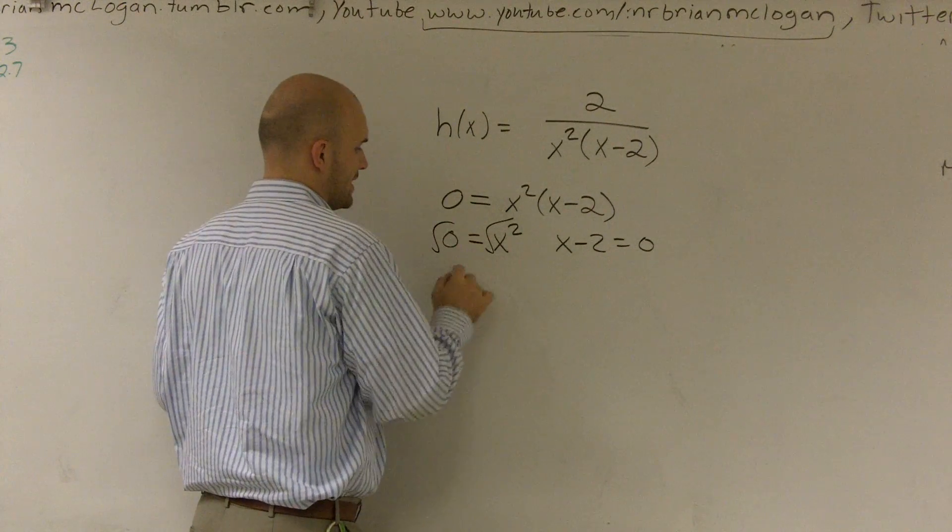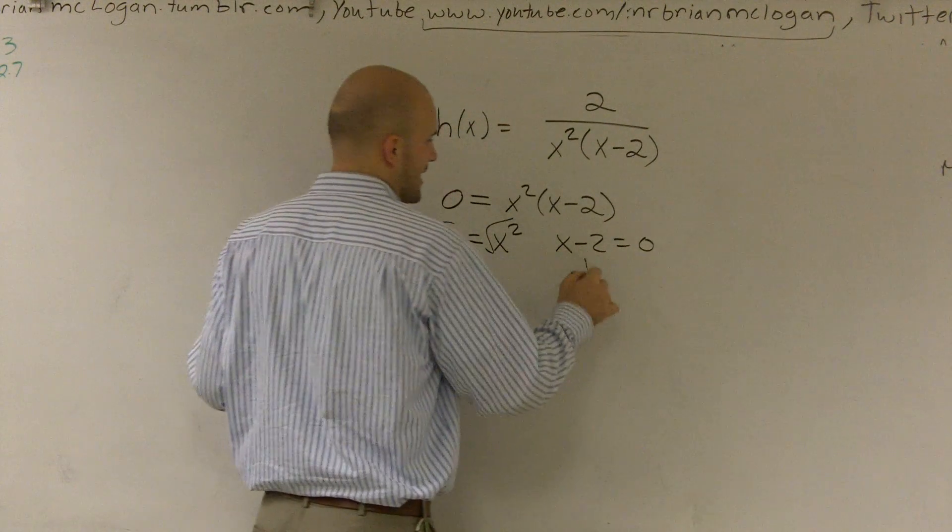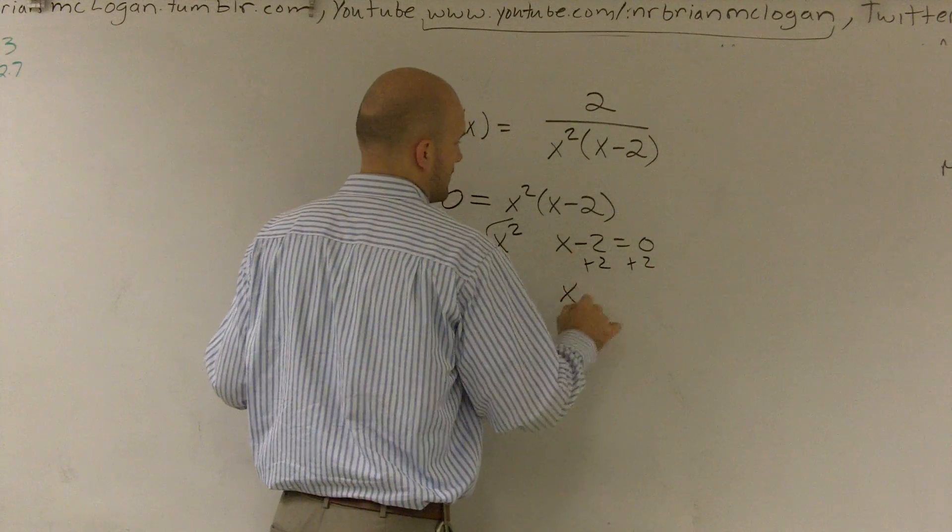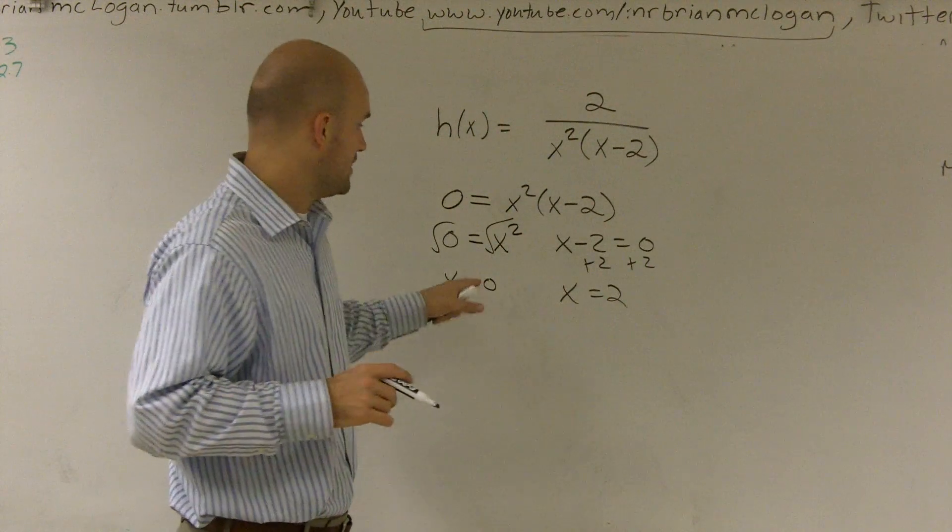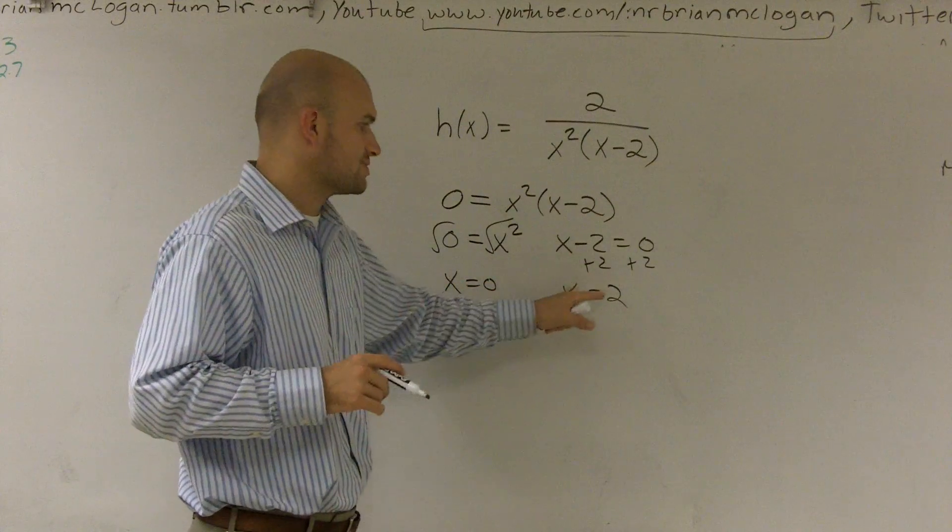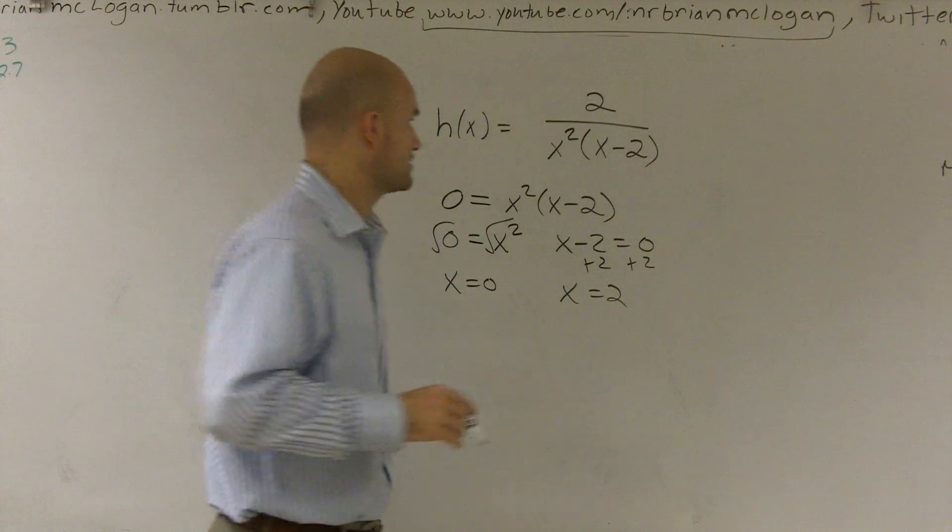Therefore, when I take the square root, I get x equals 0. And when I add 2, x equals 2. Therefore, I have two asymptotes for this problem. I have x equals 0 and x equals 2 for my vertical asymptotes.